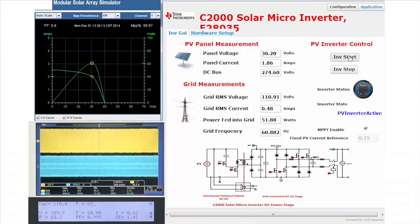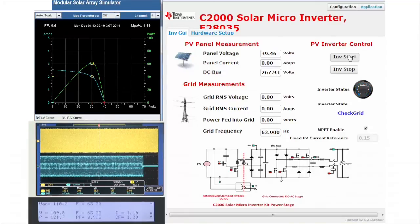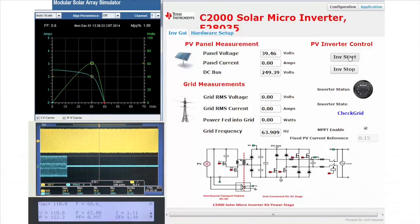First, let us change the frequency of the AC source to be 63 Hz. We see the inverter instantly shuts off. This is called over-frequency lockout. Now, bringing the frequency back to 60 Hz, we see the inverter starts up again as it detects favorable grid conditions.